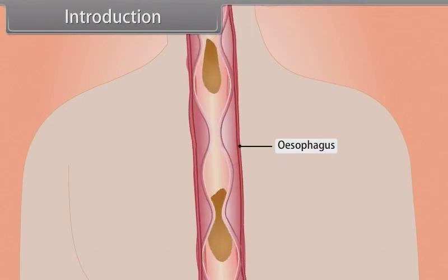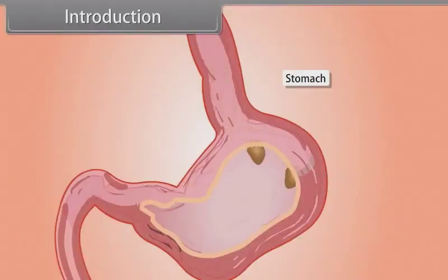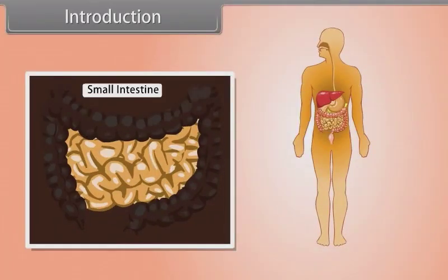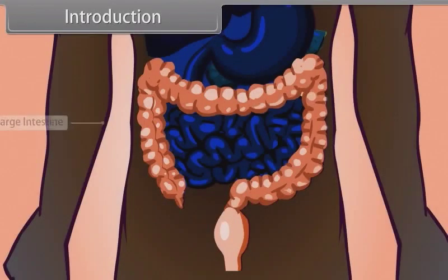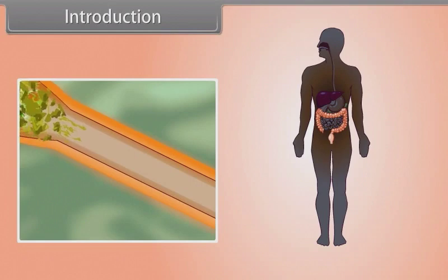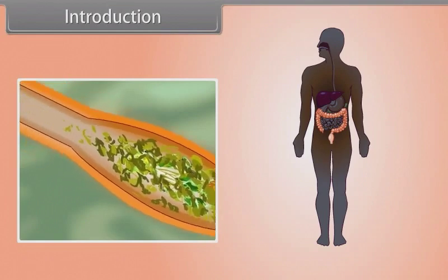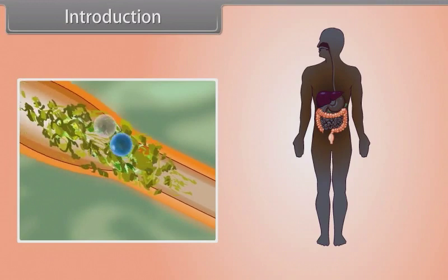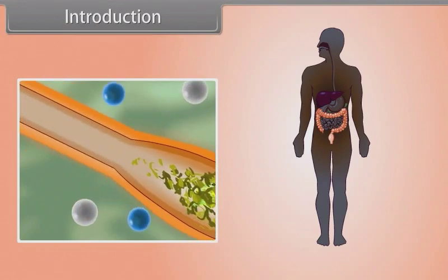Through the mouth and then through the esophagus, food goes to the stomach where digestion of protein starts. Then food enters into the small intestine, from where the undigested food goes to the large intestine and is ejected out from the body through the anus. After the digestion of food, the nutrients are absorbed from the digested products. Throughout this module, we will learn digestion and absorption.